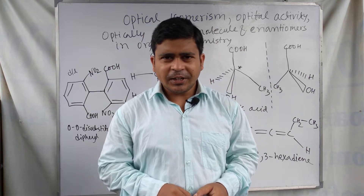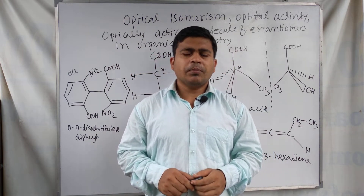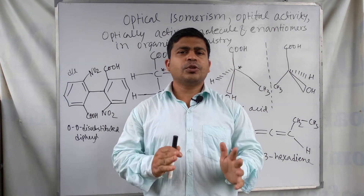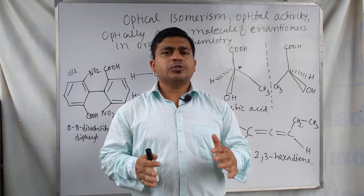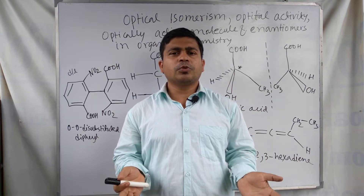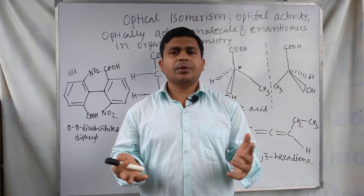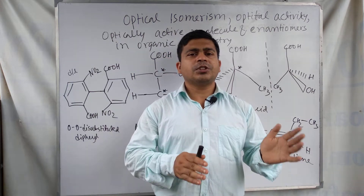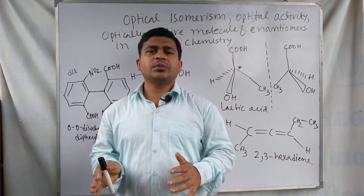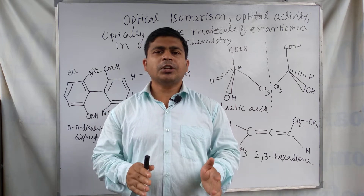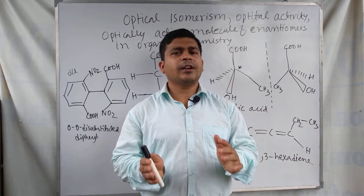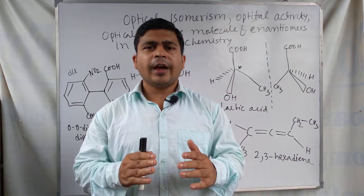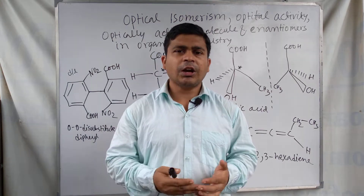Regarding optical isomerism, we have to know that for organic molecules, isomerism means compounds that have the same chemical formula but different structures and different spatial arrangements. These are called isomers. Isomerism in organic chemistry is broadly divided into two classes: stereo isomerism and structural isomerism. Optical isomerism is one kind of stereo isomerism — specifically, it is configurational isomerism.